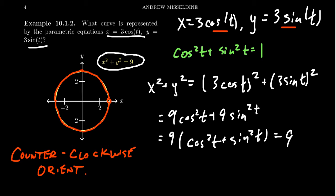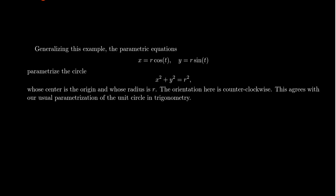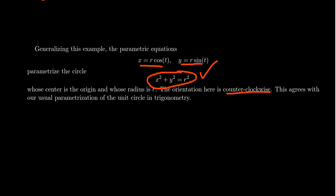The way we usually orient angles in trigonometry, it's for this reason that we orient things counterclockwise. Generalizing what we saw: if you take x equals r cosine t and y equals r sine t, removing the parameter gives x squared plus y squared equals r squared — a parameterization of the circle with counterclockwise orientation. If you want to swap the roles of cosine and sine — x equals r sine of t and y equals r cosine of t — that gives the same circle but with a clockwise orientation.